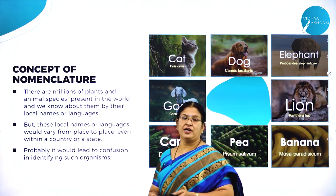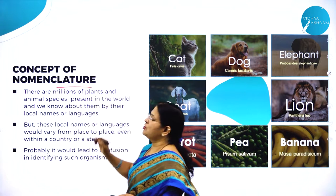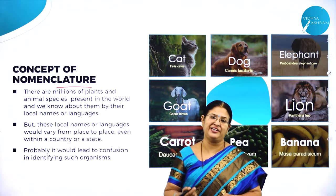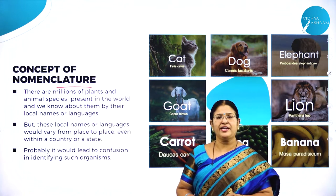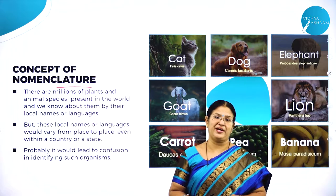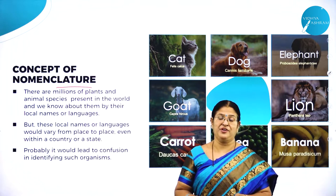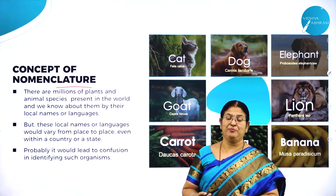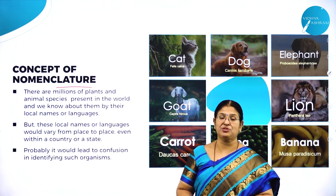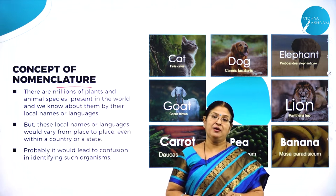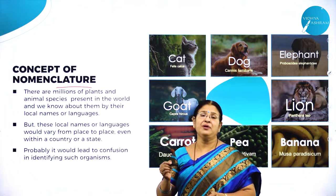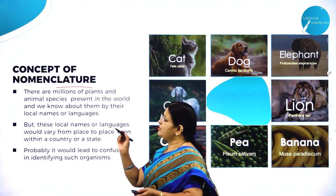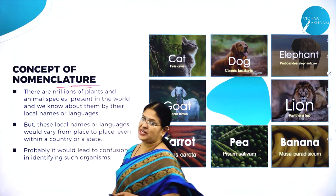Each one of us have an identity — we are all identified by our names. For example, my name is Bishobarani, so I am identified by my name and you are identified by your name. So like that, all of us are identified by our names. Giving a name is called nomenclature.